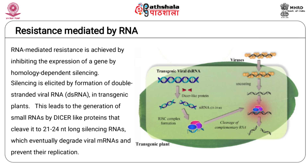In addition to protein-mediated resistance, the expression of viral coat protein, movement protein, and rep genes in transgenic plants can lead to RNA-mediated resistance. RNA-mediated virus resistance is brought about by inactivation of a virus encoding the same sense RNA as that expressed by the transgene. RNA-mediated sequence-specific gene silencing is elicited by the formation of double-stranded viral RNA in transgenic plants.